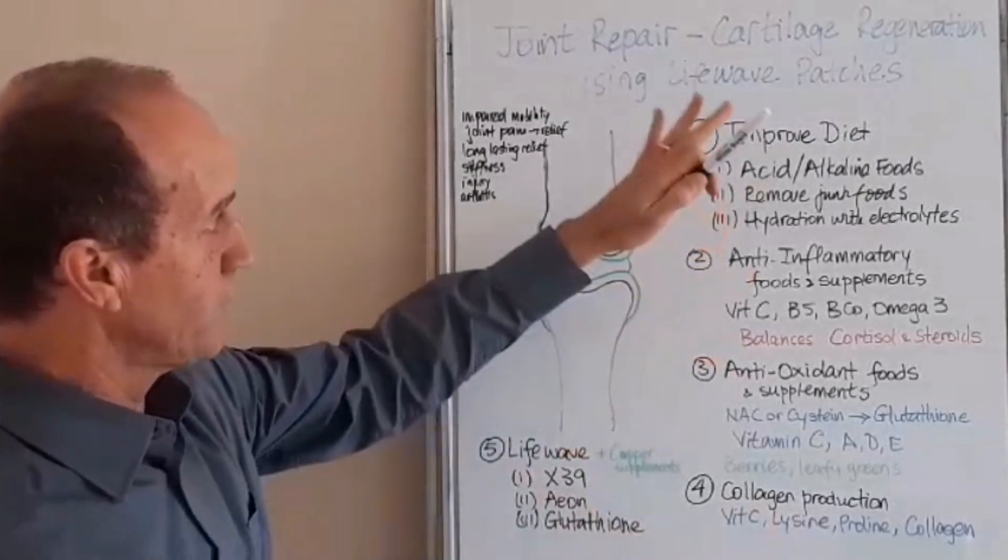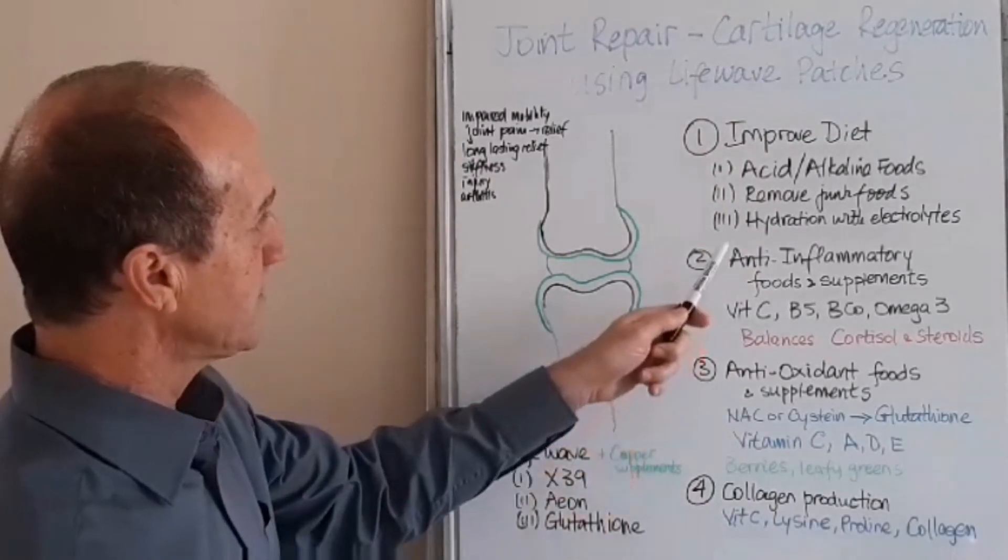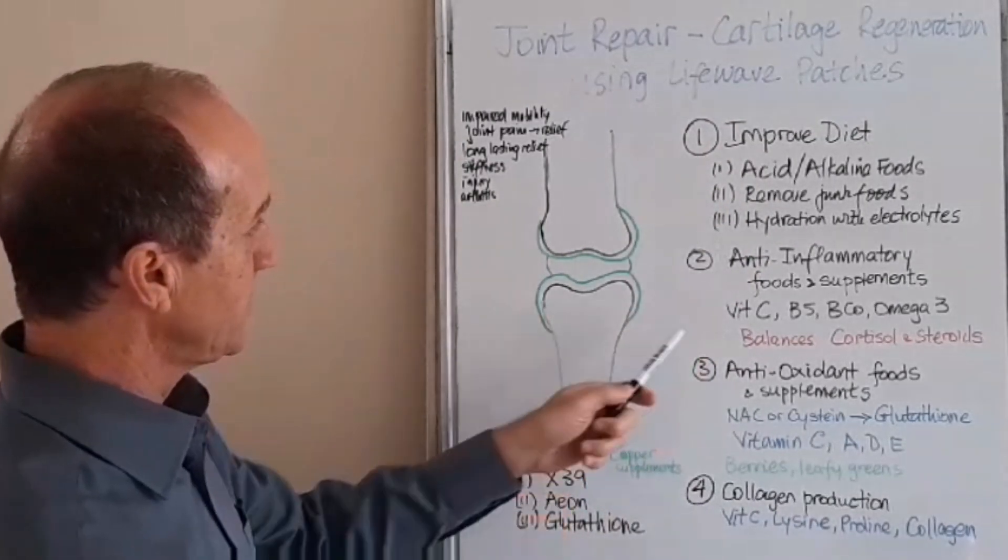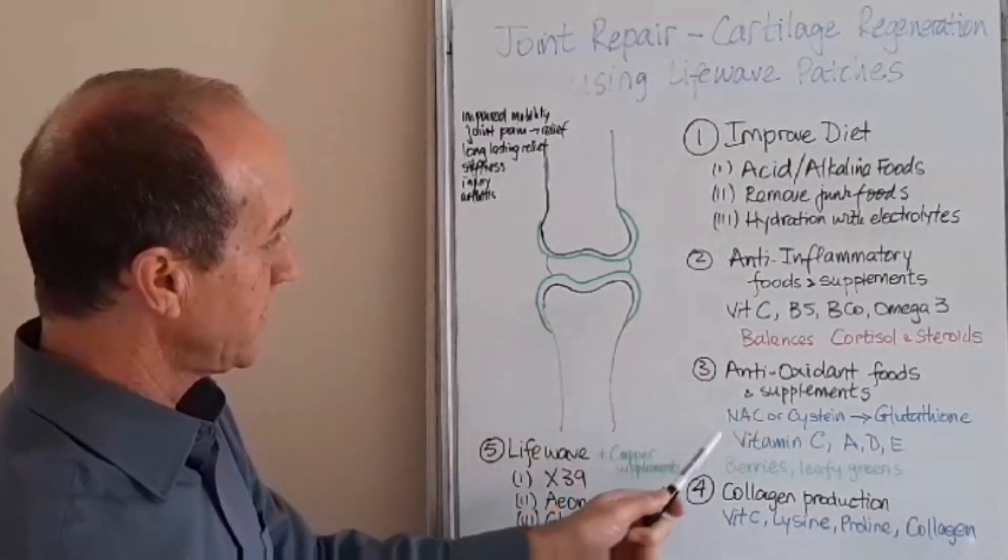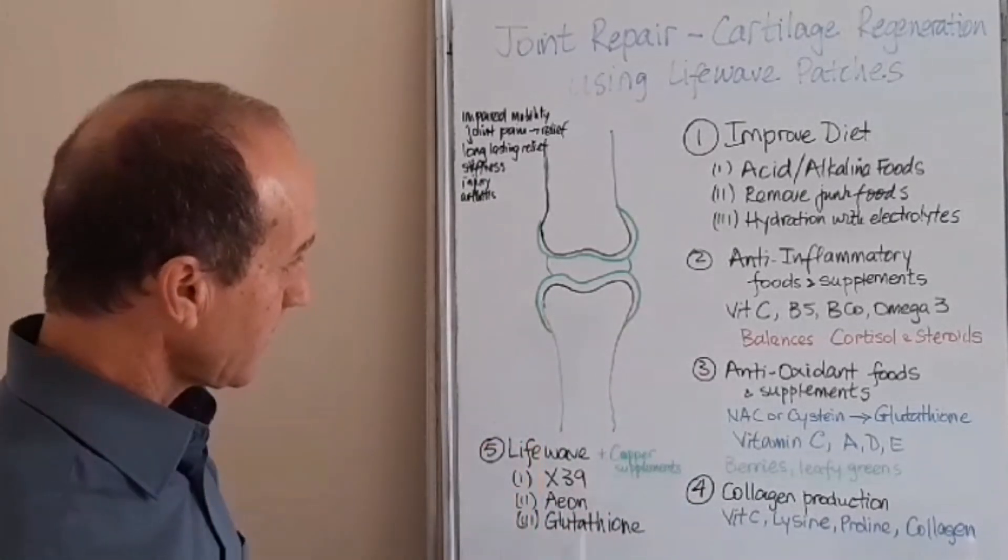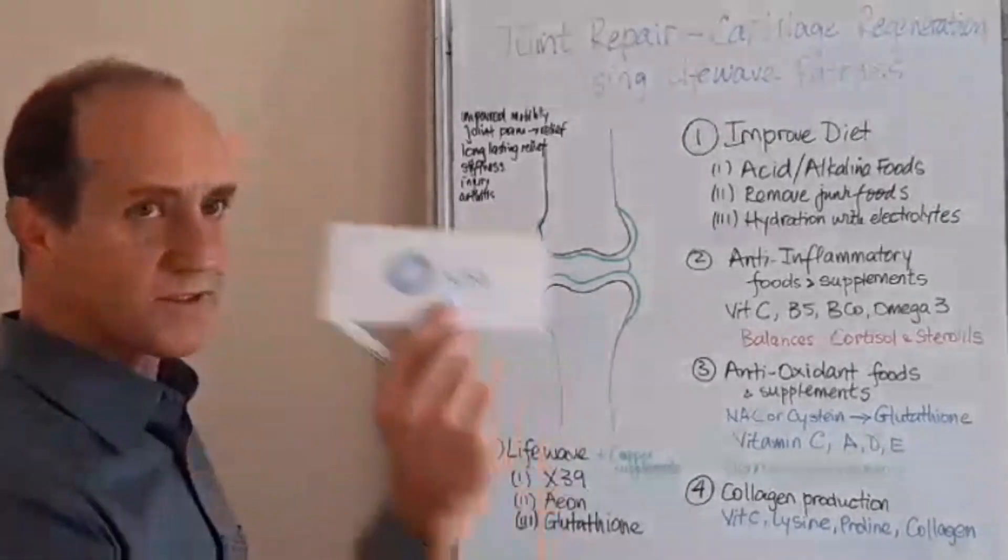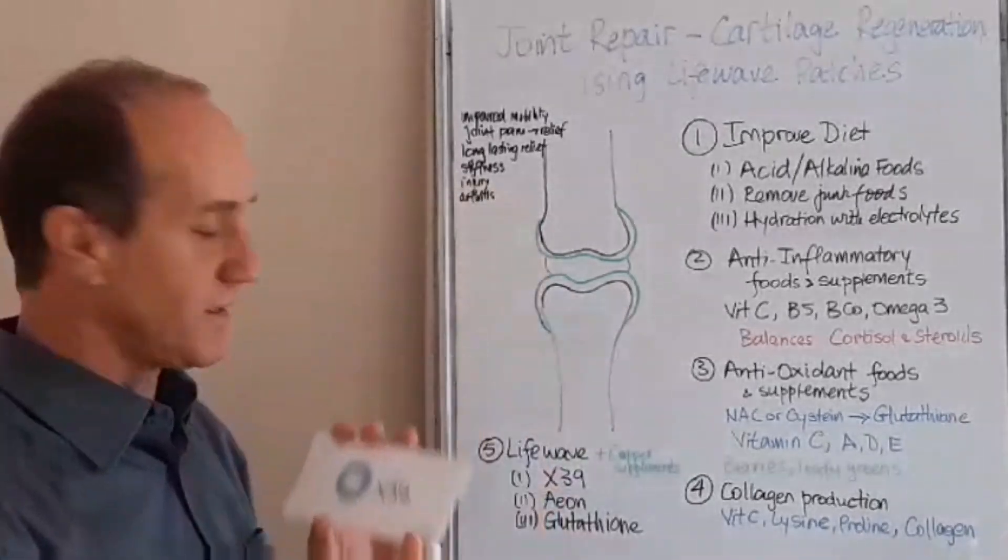So now you've got your diet improved, the environment of your body is in order. Now there's no toxins affecting it, the body is making anti-inflammatories, the antioxidants are there to protect, and then you've got your collagen available. Now that's when the magic happens. The magic happens with the X39.